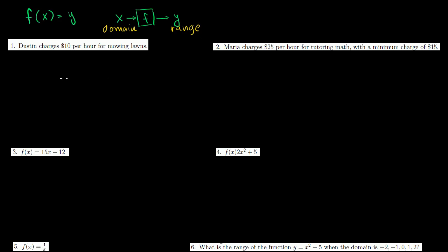With that in mind, let's figure out the function definitions for each of these example problems and then figure out the domains and ranges. Dustin charges $10 per hour for mowing lawns. So how much does he charge as a function of hours? I'll call it d for Dustin. Dustin charges as a function of hours — the input into our box is going to be hours that he works — and it's going to be equal to 10h. He can't work negative hours, so h is greater than or equal to 0. That's our function definition.